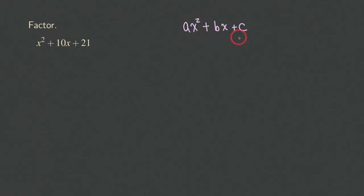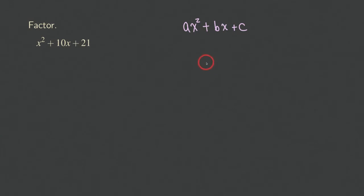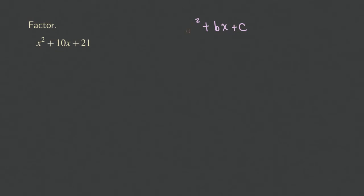I use what we call a trial and error method — we just get a combination and try it to see if it works. If it doesn't work, we try another combination to check whether it works. Now let's get started on this problem.